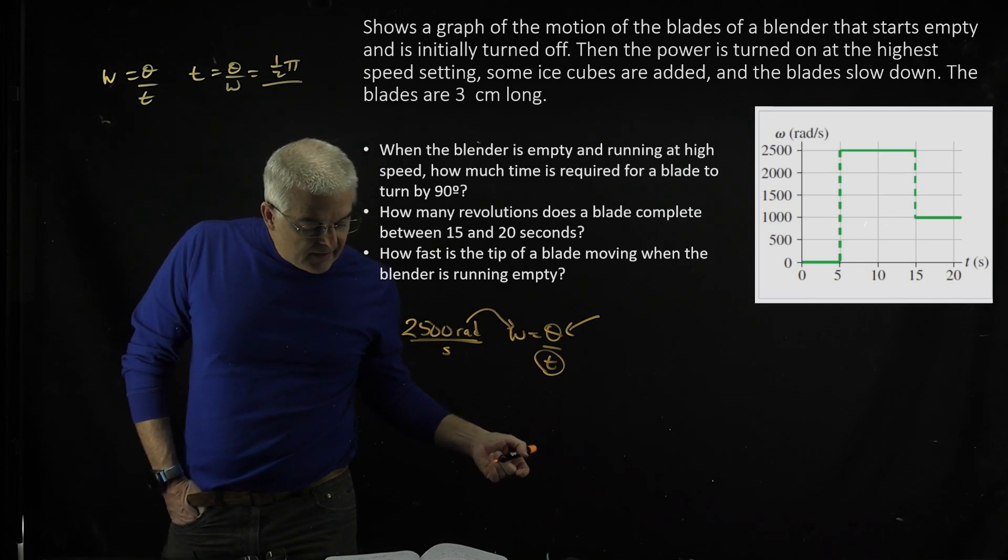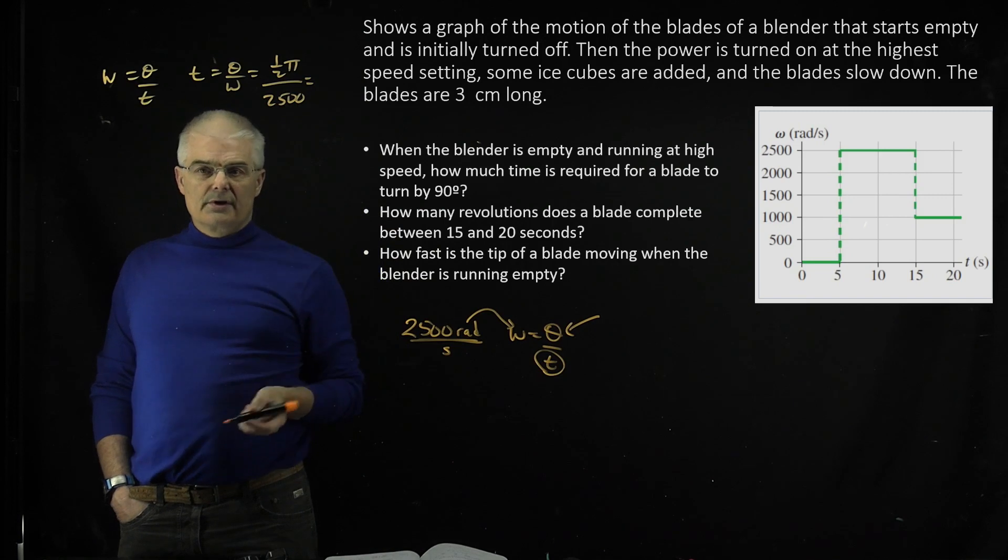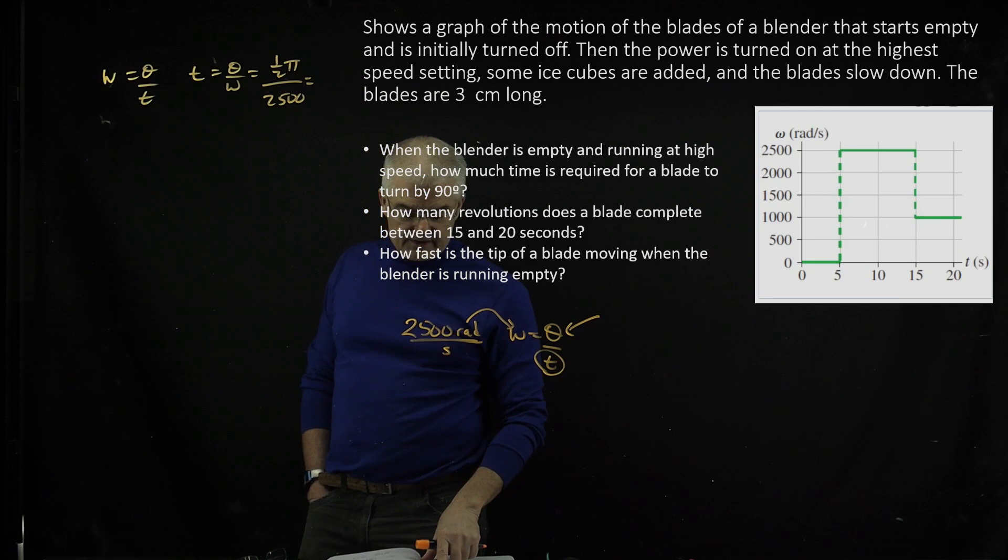And so that's just going to be 1.5 times π divided by our speed, which was 2,500. And as a note, you're going to get a very small answer. I have 6.3 times 10 to the minus 4 seconds.